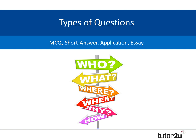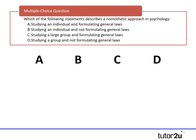Let's now look at the types of questions that could come up, starting with a multiple-choice question, because even in year two psychology you can still get these. Which of the following statements best describes the nomothetic approach? A — studying an individual by formulating general laws; B — studying an individual and not formulating general laws; C — studying a large group and formulating general laws; or D — studying a group and not formulating general laws. Clearly it's not going to be the individual, so not A or B — that's the ideographic approach. And it's not D, because the real key to the nomothetic approach is to create general laws. So the correct answer is C.